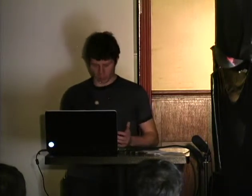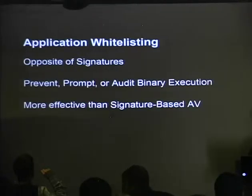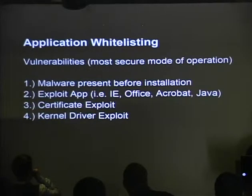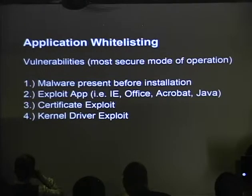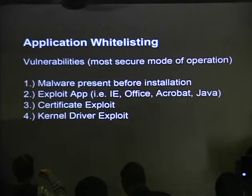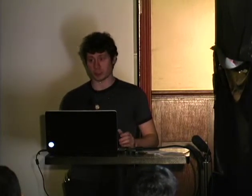This is a tremendous advantage over signature-based AV, which can only detect what it knows. Unfortunately there are still ways to defeat it. Even in the most secure mode of operation, I see about four different ways to bypass these solutions. If your malware is already present before the application whitelisting product is installed, it can prevent the installation from being successful — and if it wants to be subtle, it can make it look like a product malfunction so you end up blaming the product instead of suspecting malware.